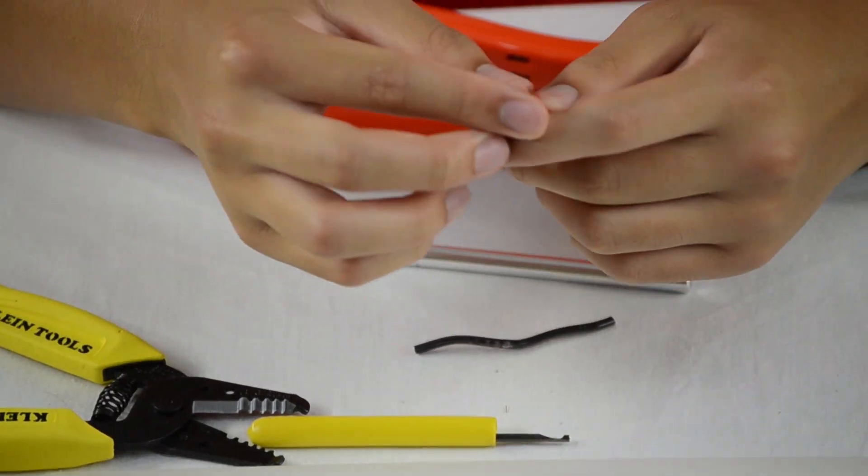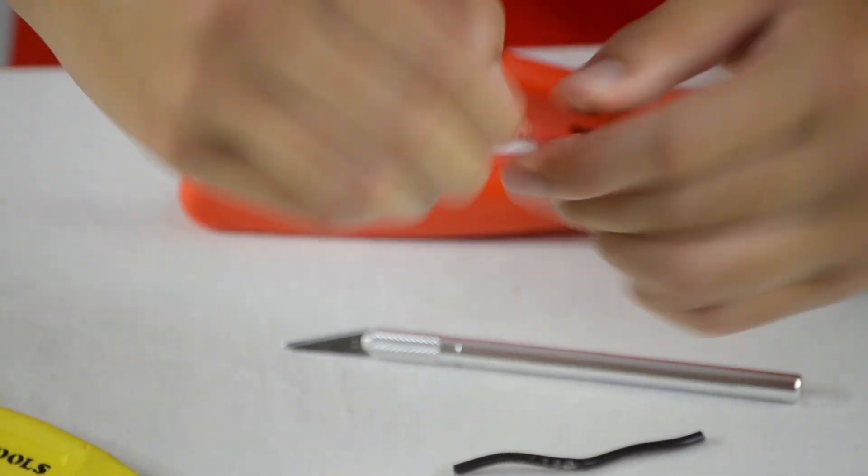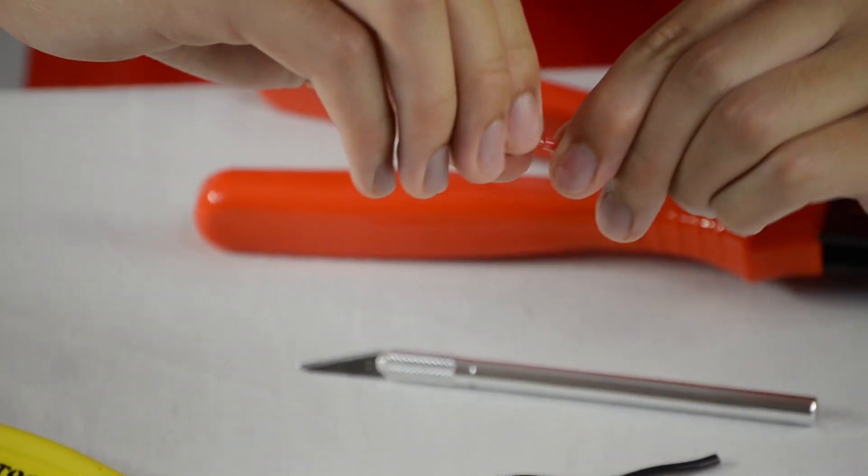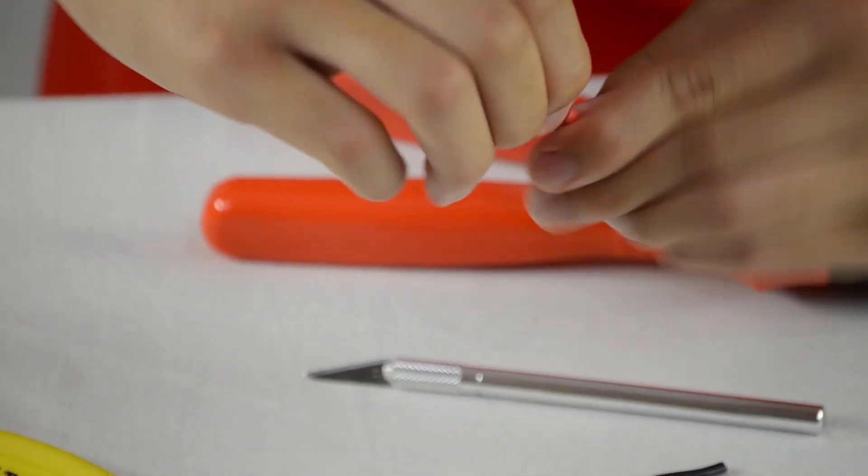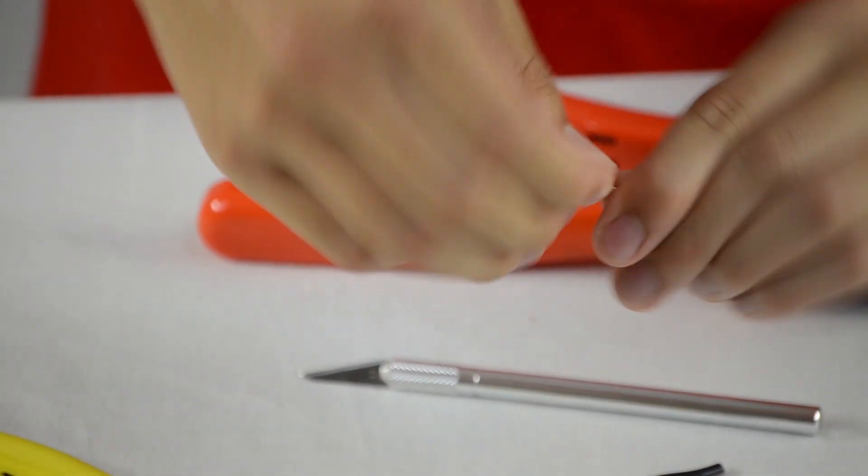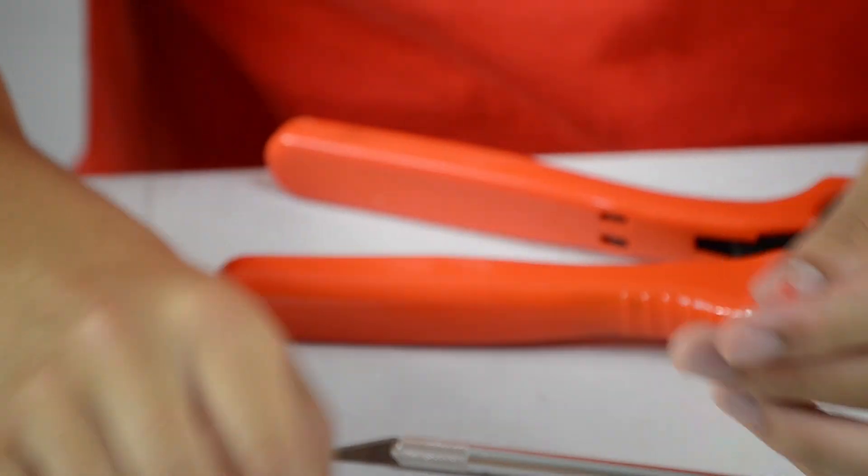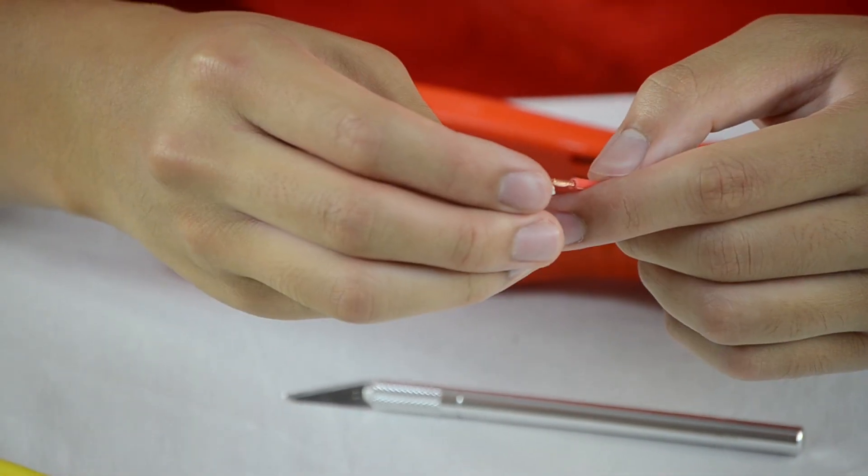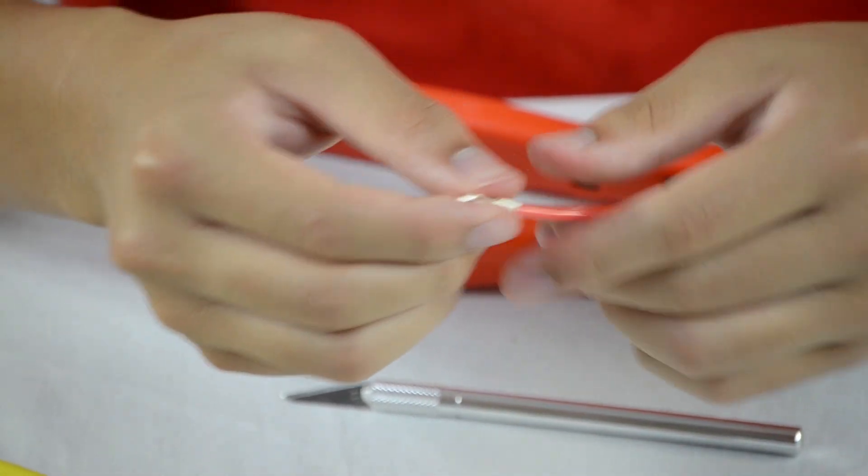And now you have your tips exposed. Now you want to actually take it and twist it very, very tightly so that when you put it in the metal tip, it won't actually snag any loose wires and have them be bent outwards. So, after you've twisted them, take your 15 gauge metal tip and just slide it over the top of your exposed tips like that.